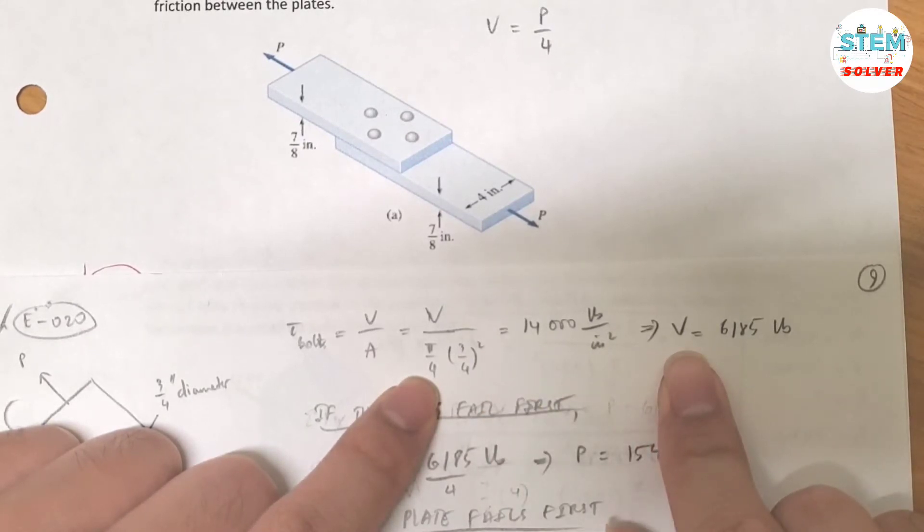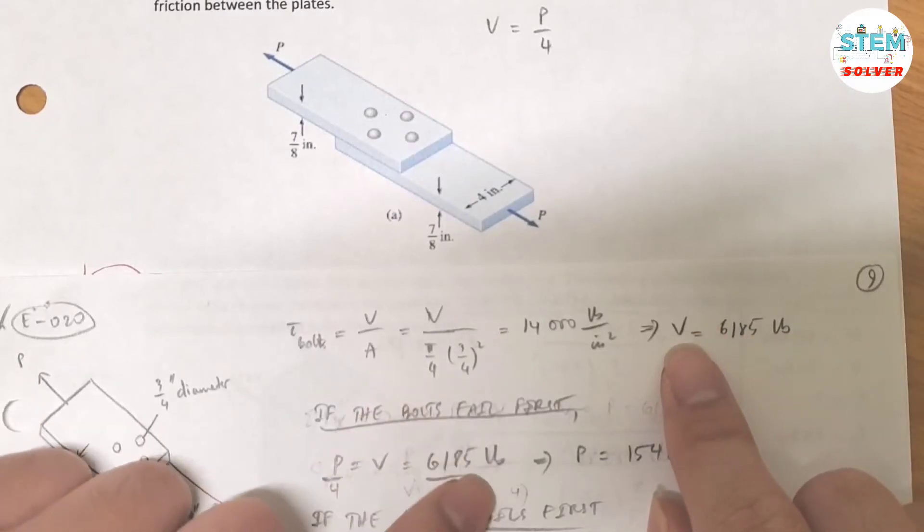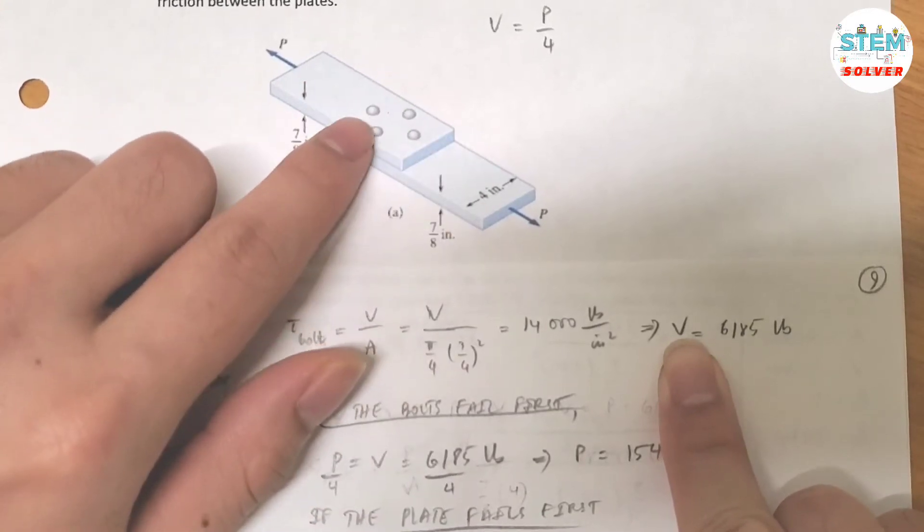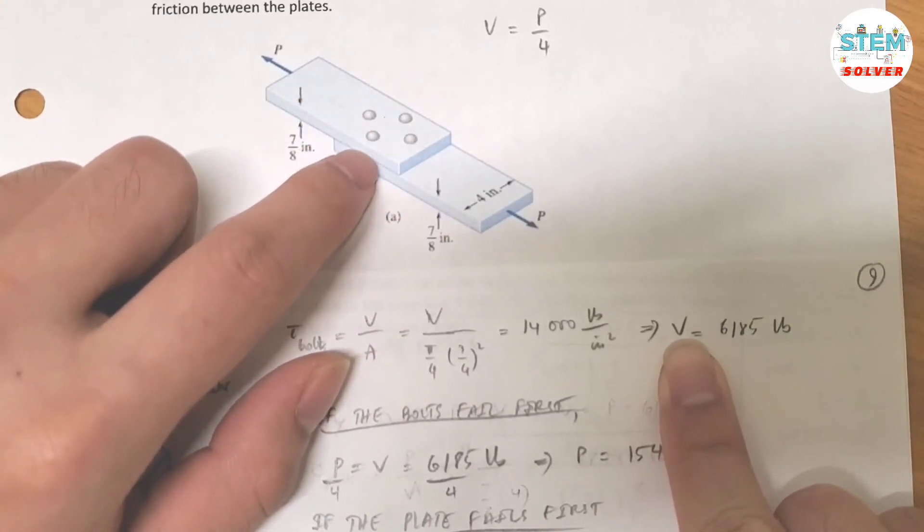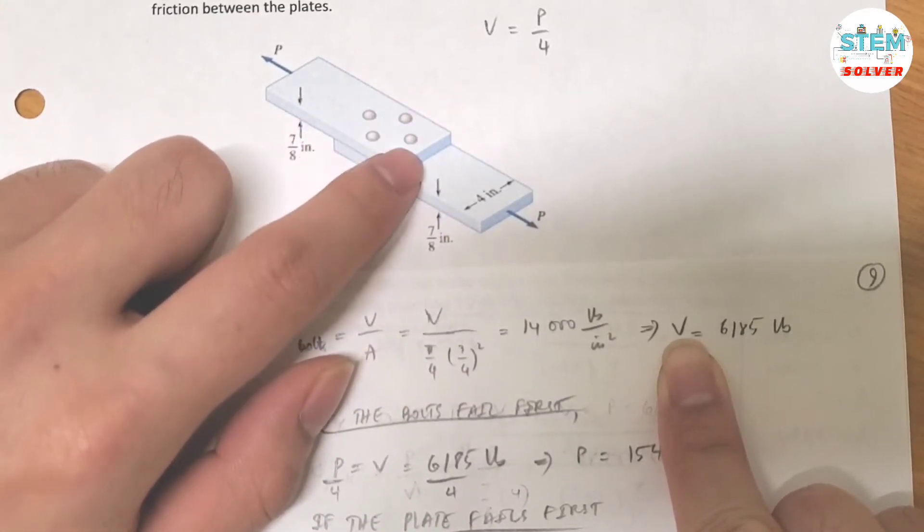Then I can find V which is 6,185 pounds. And remember that this shear force is the shear force for the whole thing, which is the shear force of 1, 2, 3, 4 rivets.